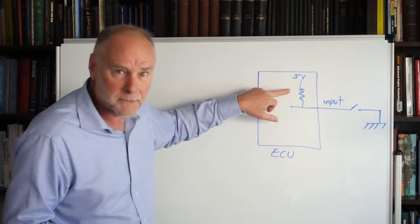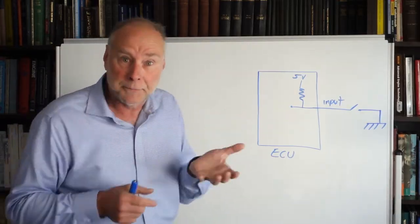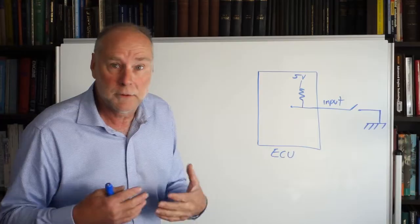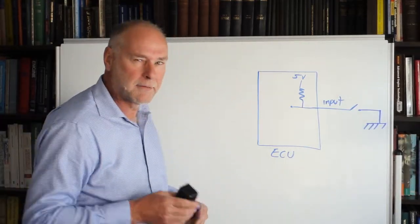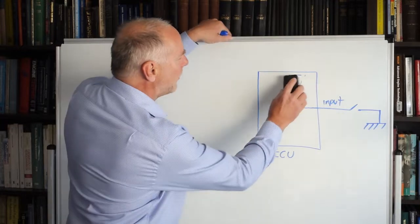So here is a pull-up resistor. It pulls the input up to five volts when otherwise it would be on zero. Pull-up resistor, I wonder if you can now have a bit of a think and see what you think a pull-down resistor is.